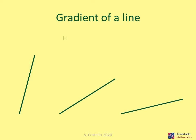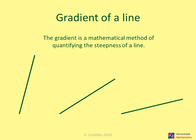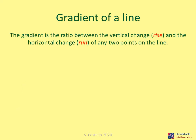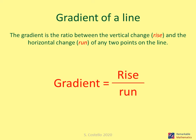Here we have three lines — how steep are they? The gradient is a mathematical method of quantifying the steepness of a line. The gradient is a ratio between the vertical change (the rise) and the horizontal change (the run) of any two points on the line. Gradient equals rise over run.